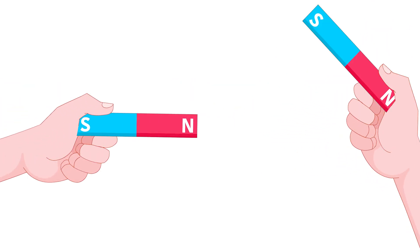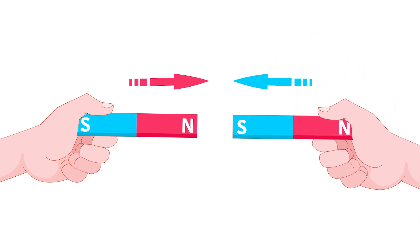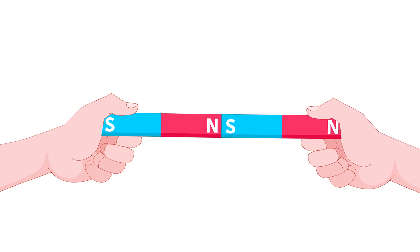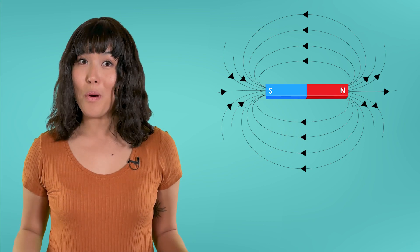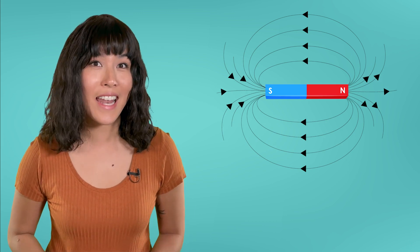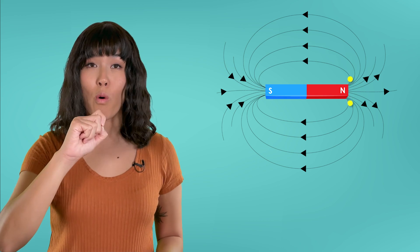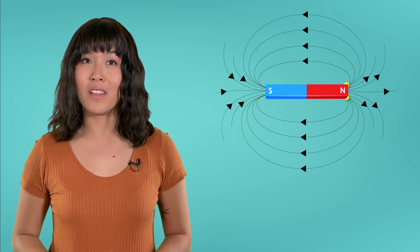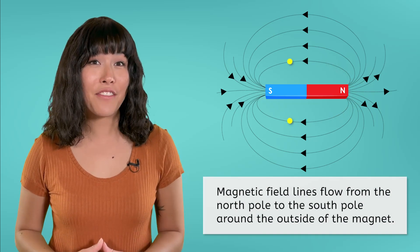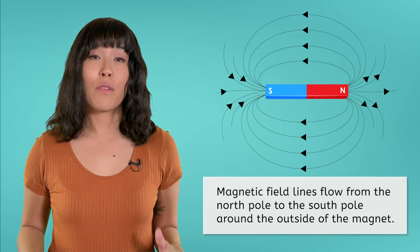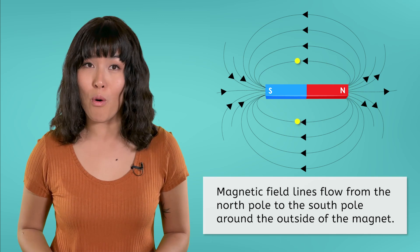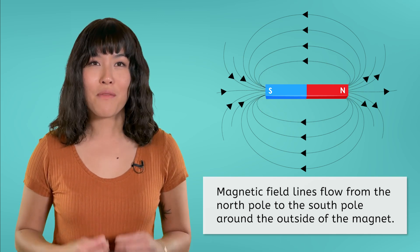But if you bring a north pole near a south pole, they'll pull toward each other. These poles are the sources of the magnetic field. The field lines emerge from the north pole and curve around the magnet re-entering at the south pole. This flow gives the magnetic field a direction, which is from the north pole to the south pole around the outside of the magnet.